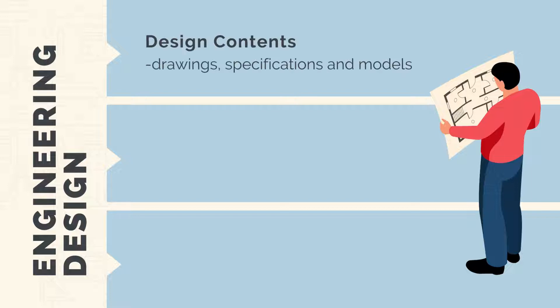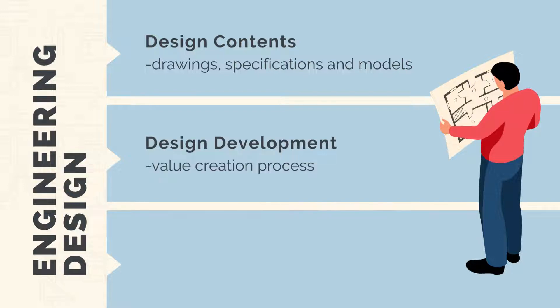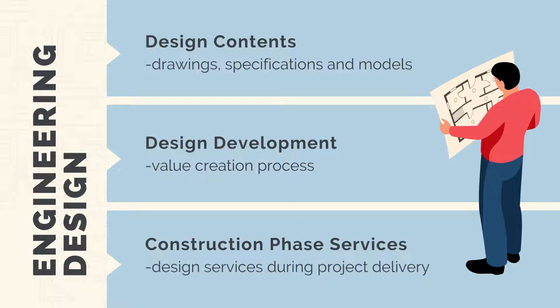We'll talk about the contents of the design, including the drawings, specifications, and models. Under this topic, we'll also briefly look at the different engineering disciplines and design basics like electrical, civil, structural, and mechanical. We'll investigate the design development process — the value creation process where designers understand a client's requirements and turn this into a proposed product that can be delivered by a contractor. And finally, we'll look at construction phase services and the design services needed during the construction and start phase of the project.